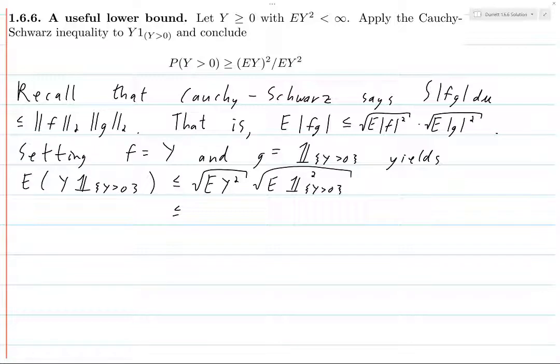So the integral of Y is just the integral of Y over the set where Y is 0 plus the integral of Y over the set where Y is greater than 0. But if we're integrating over the set where Y is 0, then that integral is just going to be 0, because the function is 0 at all of those points.